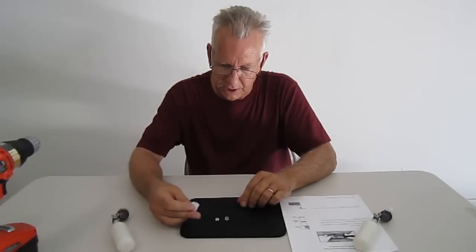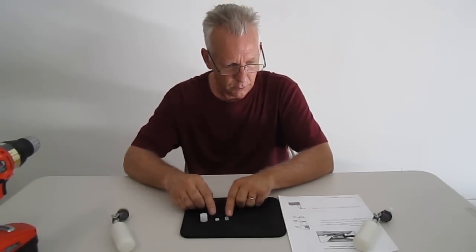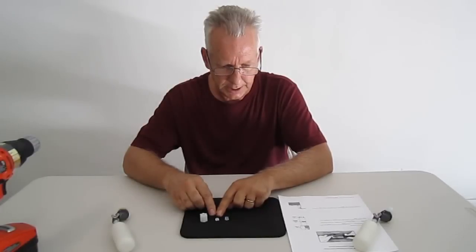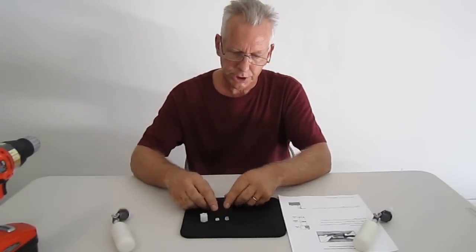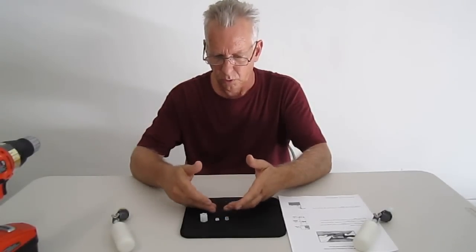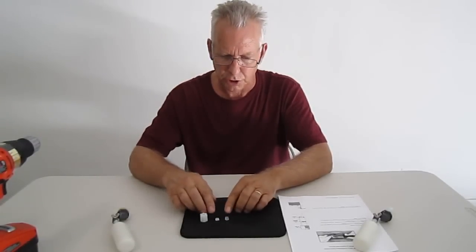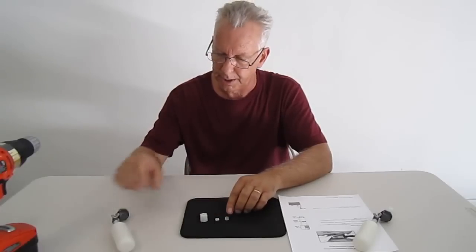If you take this valve apart, there's going to be what we call a plastic gripper inside and a sleeve inside. Just in case this falls out on you while you're installing it, you want to make sure you put them back in properly. We're going to show you how to do that.